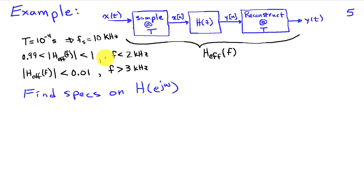This is going to be a low-pass filter. So for frequencies less than 2 kilohertz, we're going to require the magnitude response of the overall chain to be between 0.99 and 1. And then above 3 kilohertz, we'll assume that's our stop band,